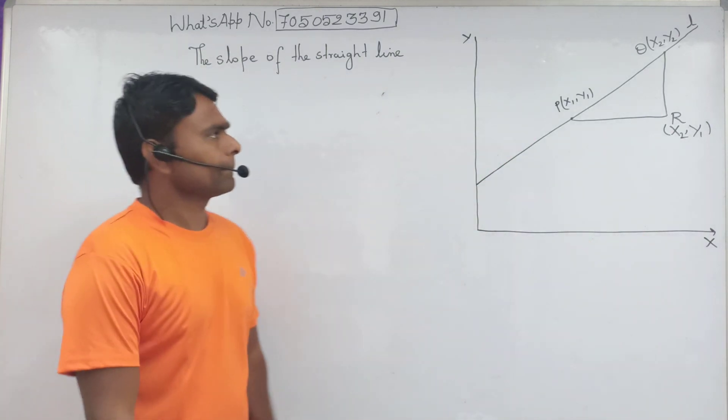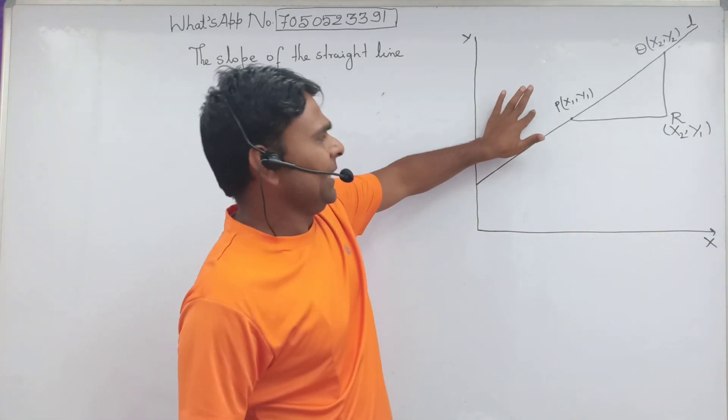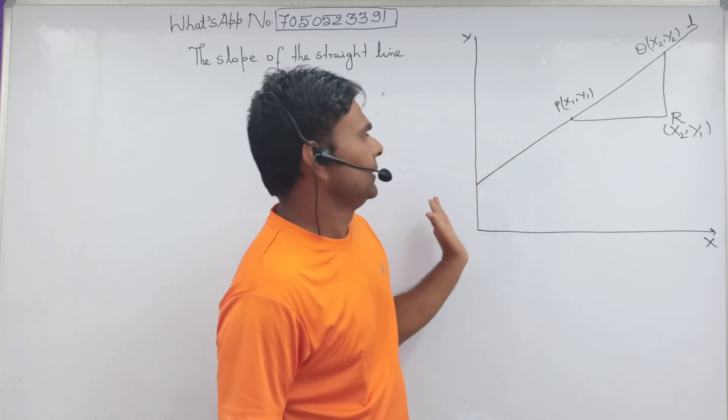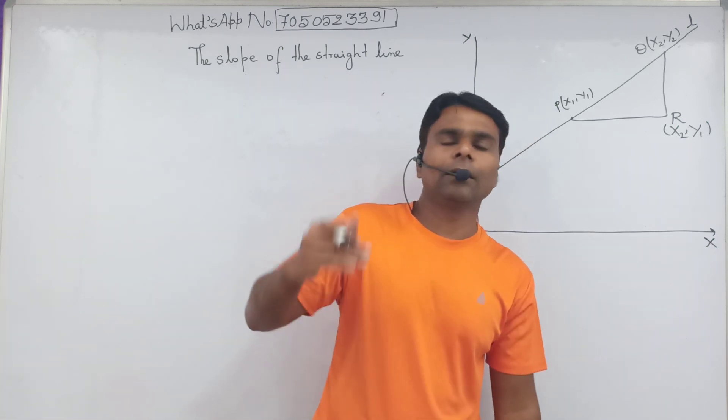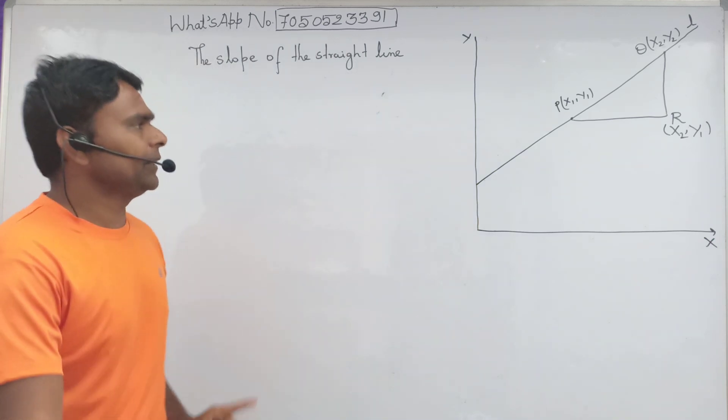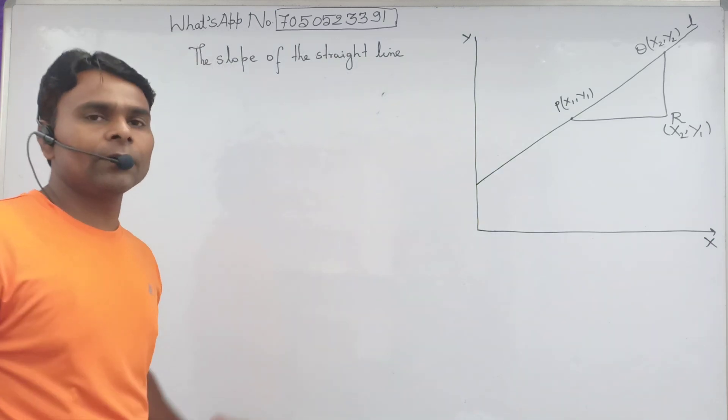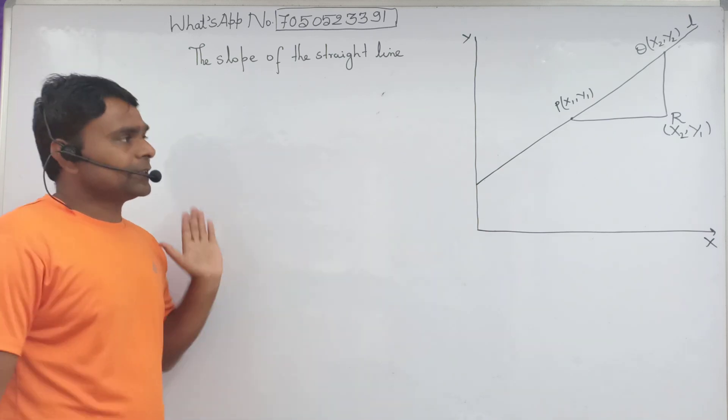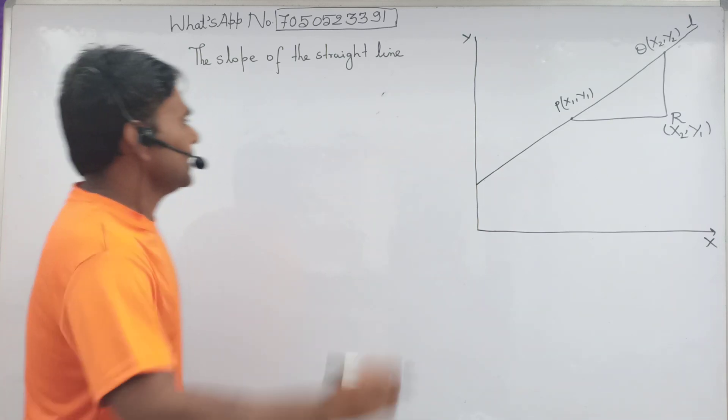We can draw a point R which lies at x2 and y1. You can see here the point P and Q are two distinct points, two different points.